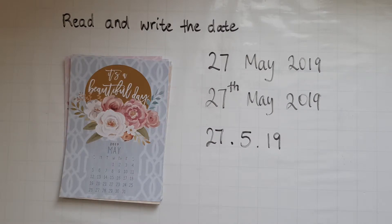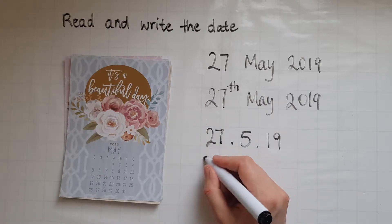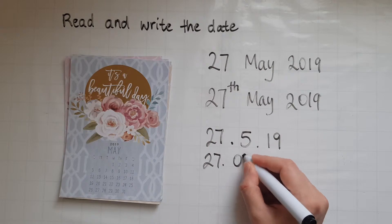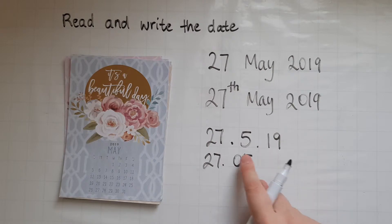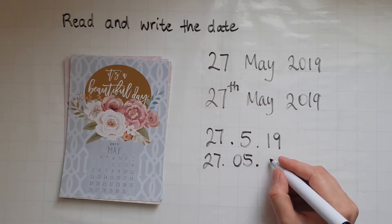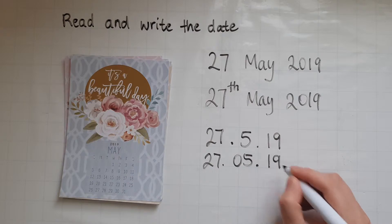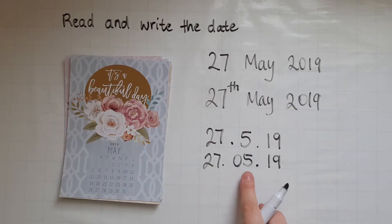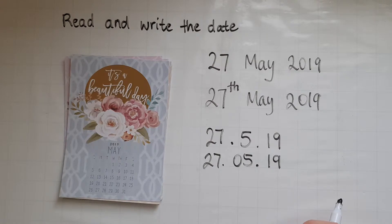January is the 1st, February is the 2nd, March is the 3rd, and April is the 4th, so May is the 5th. Writing a zero in front is also absolutely correct, so 27/05/19 means the same thing: 27th of May 2019.